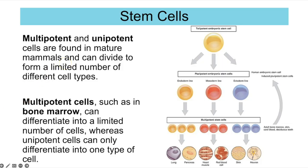Multipotent and unipotent stem cells are found in mature mammals and can only divide into a limited number of different types. Multipotent stem cells — for example, those found in bone marrow — can only differentiate into the types of blood cells. Unipotent stem cells can only differentiate into the same type of cell, for example skin cells replicating and differentiating into more skin cells.